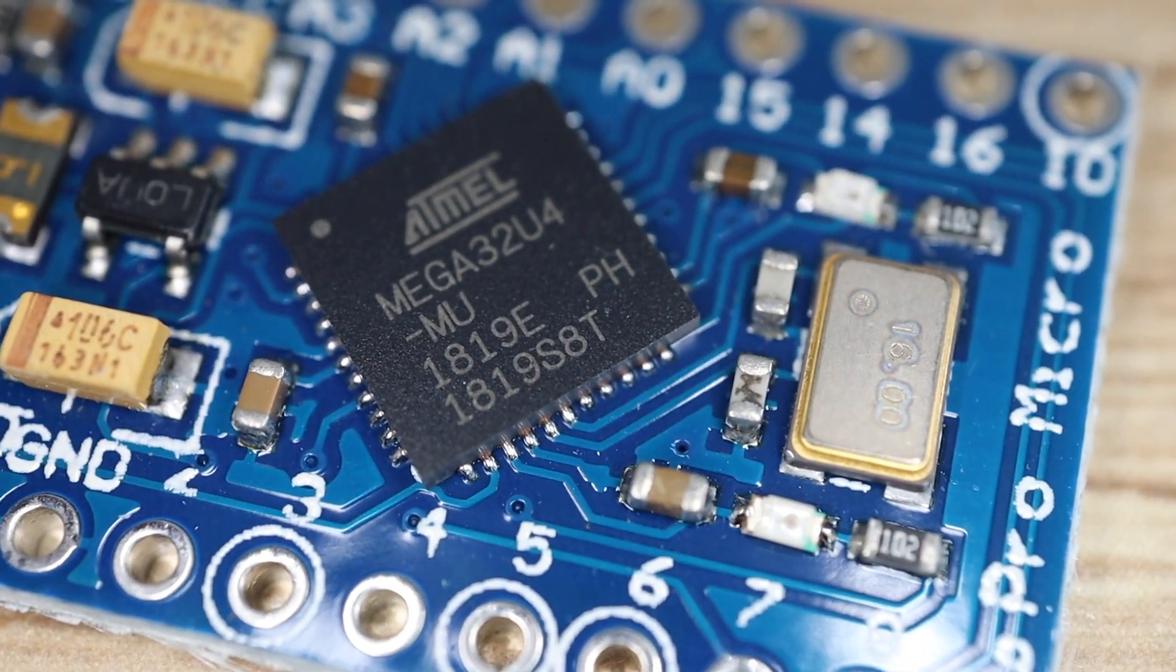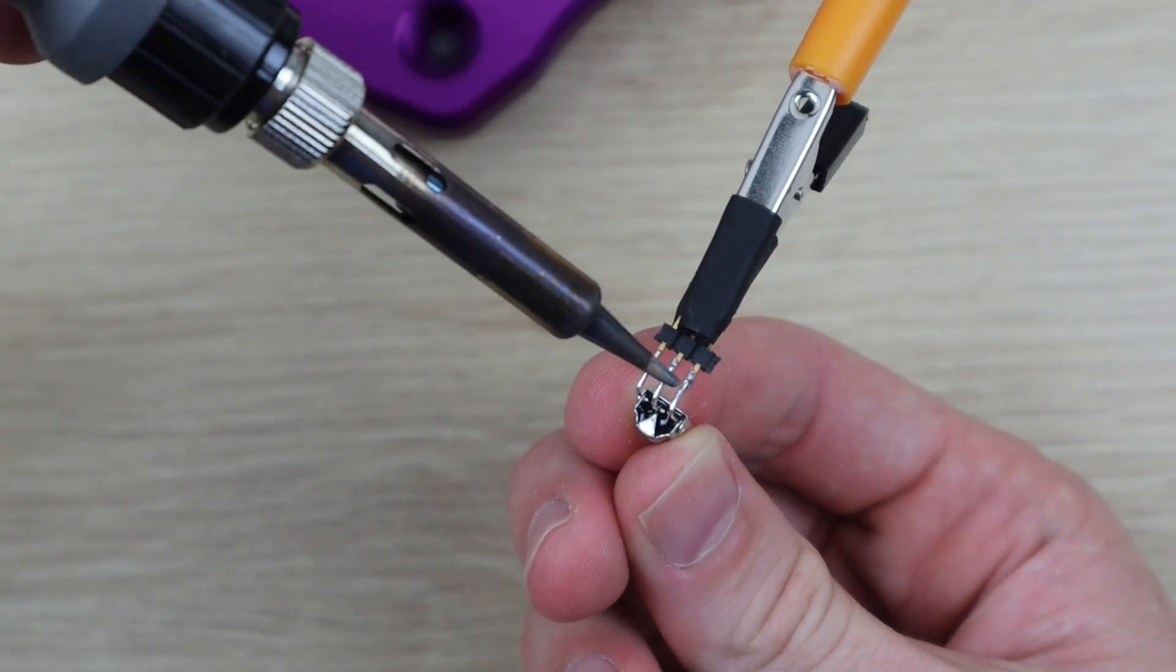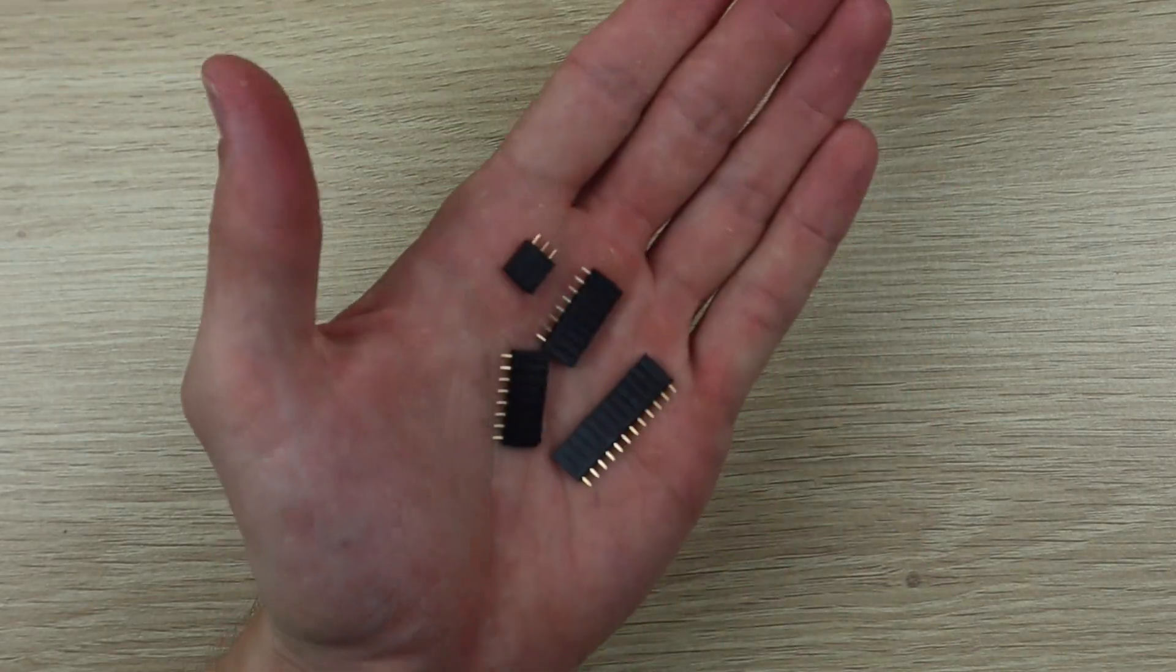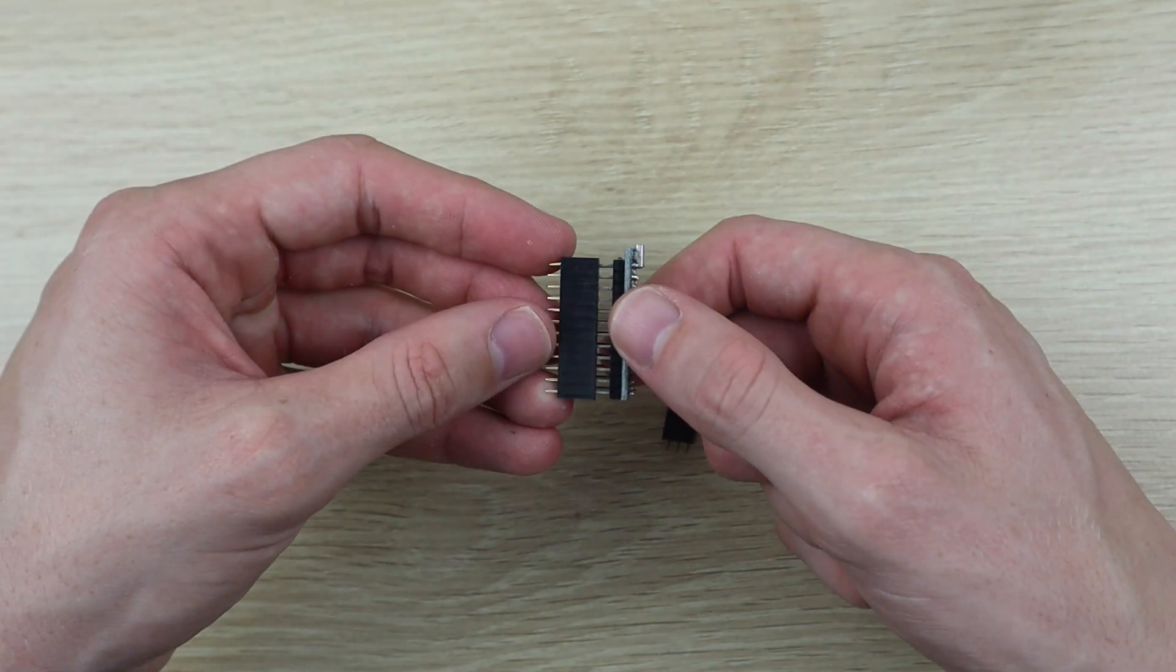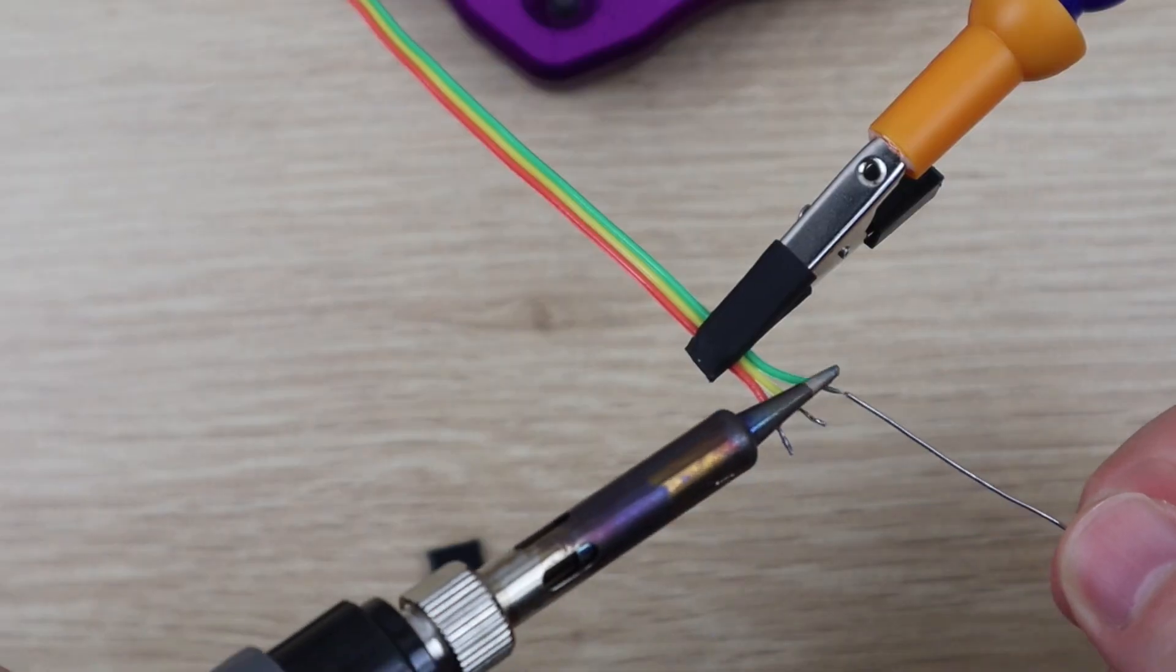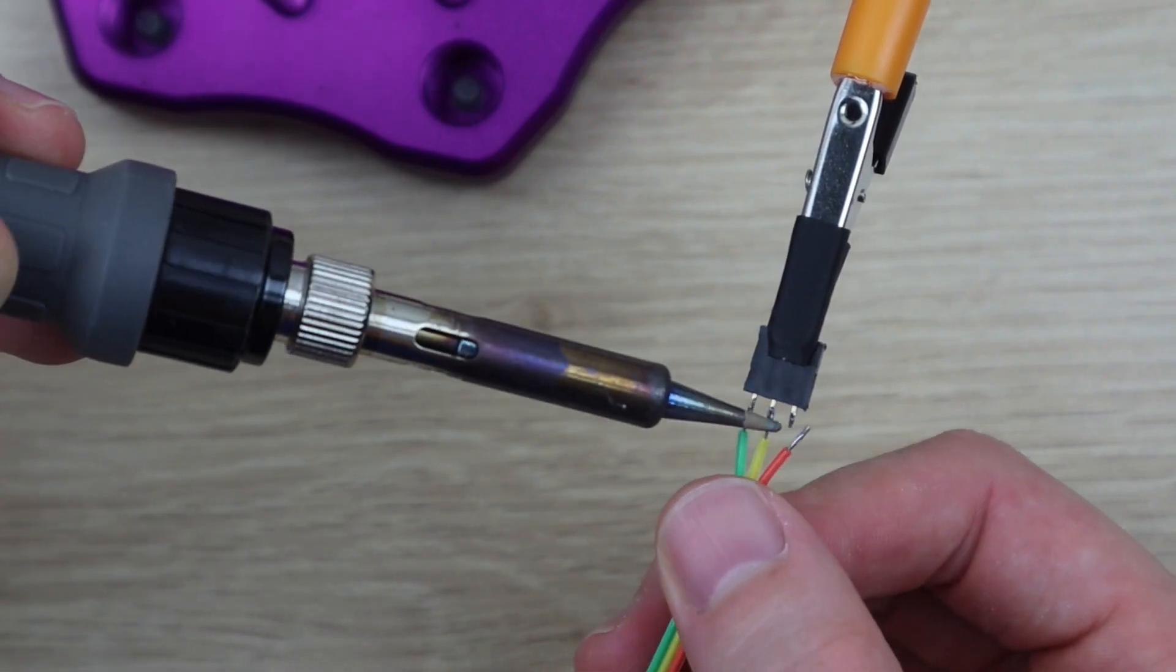Let's assemble the components. The connections are all made on sections of header strips, which are cut to size according to the components. You'll need two 8 pin strips for the stepper motor driver, one 12 pin strip for the Arduino, as you're only using the pins on one side, and then one 3 pin strip for the infrared sensor.